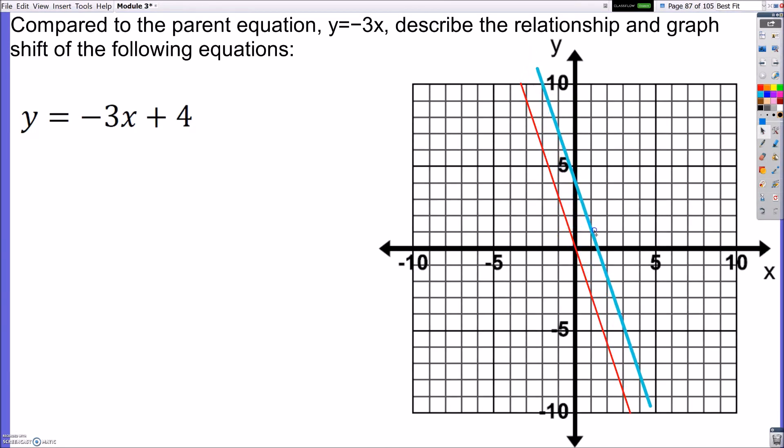So these two lines have the same steepness, but the difference here is the y-intercept. This one is translated up 4 units. So y equals negative 3x plus 4 is translated 4 units up. And that's why it has a y-intercept of 4 instead of 0.